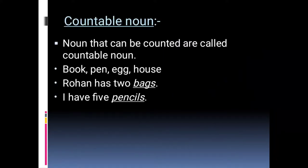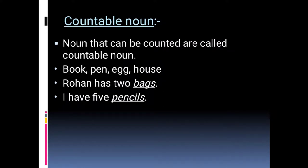What do you mean by countable noun? Nouns that can be counted are called countable nouns. Examples: book, pen, egg, house — these are considered countable nouns as they can be counted. 'Rohan has two bags' — bags is a countable noun because we can count them. 'I have five pencils' — pencil is a countable noun because we can count the pencils.